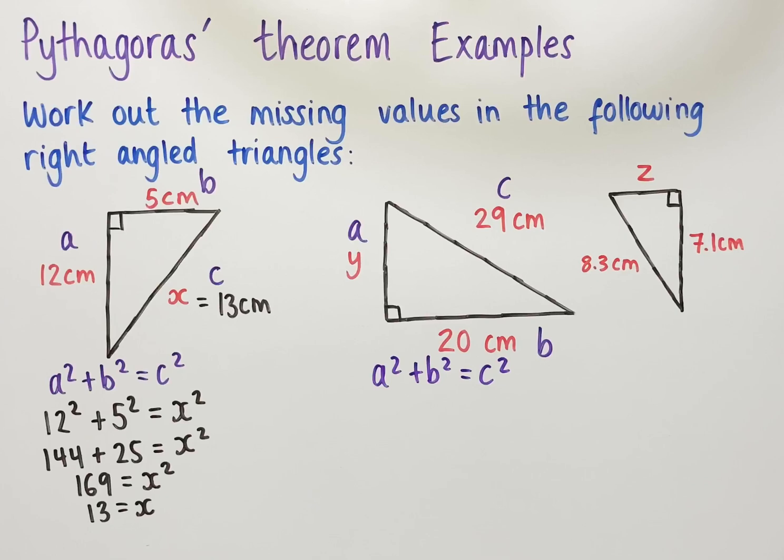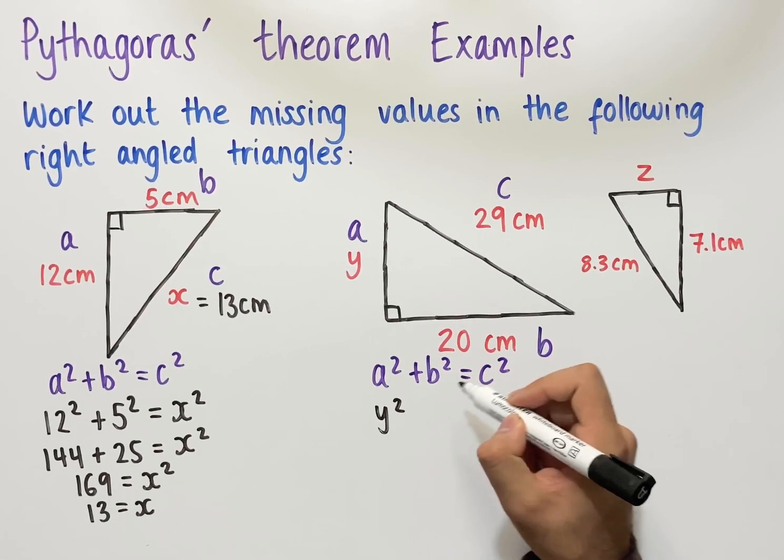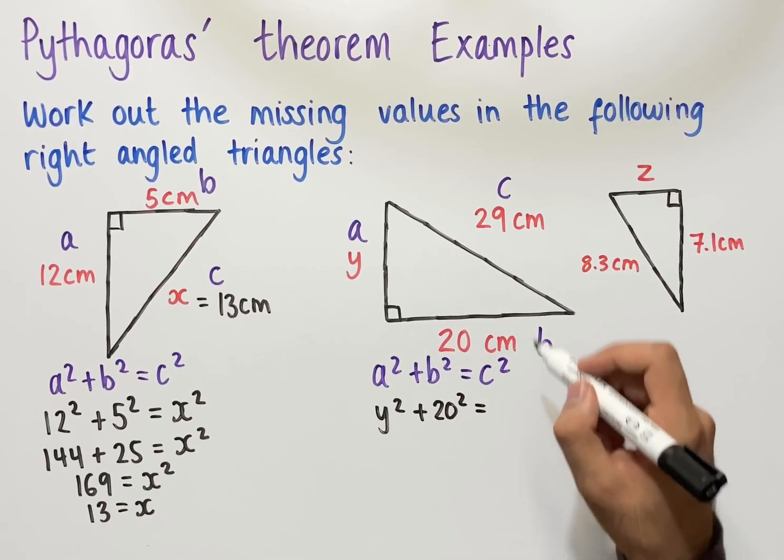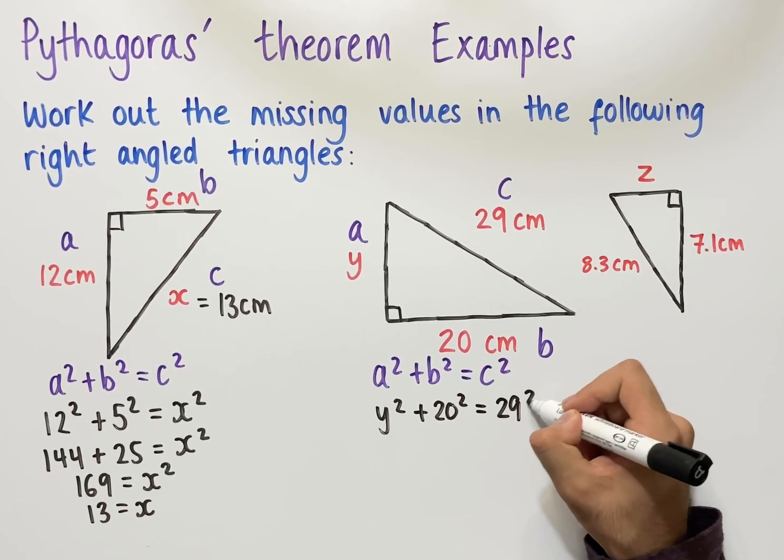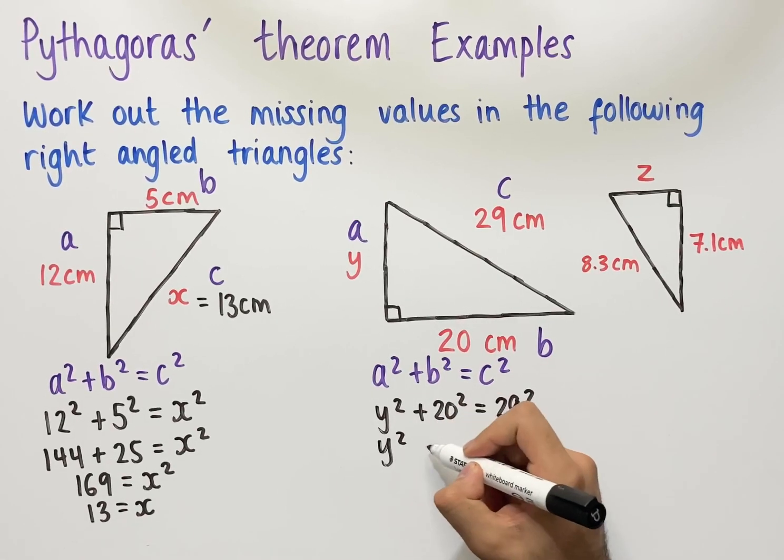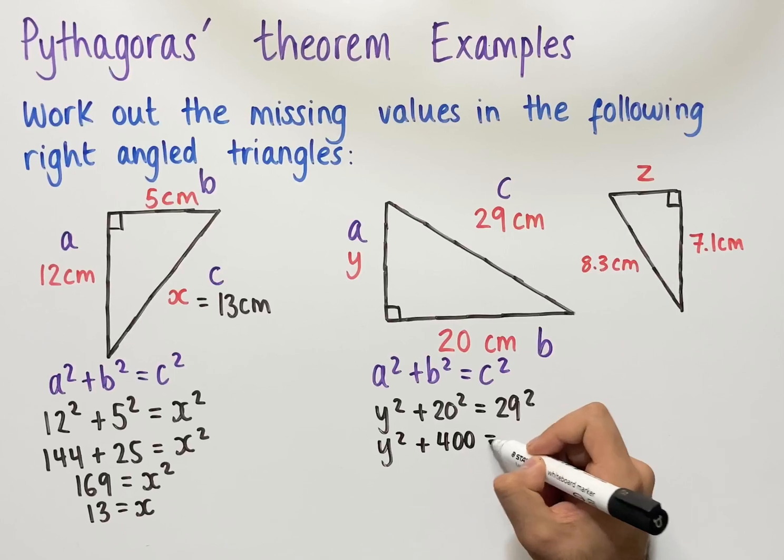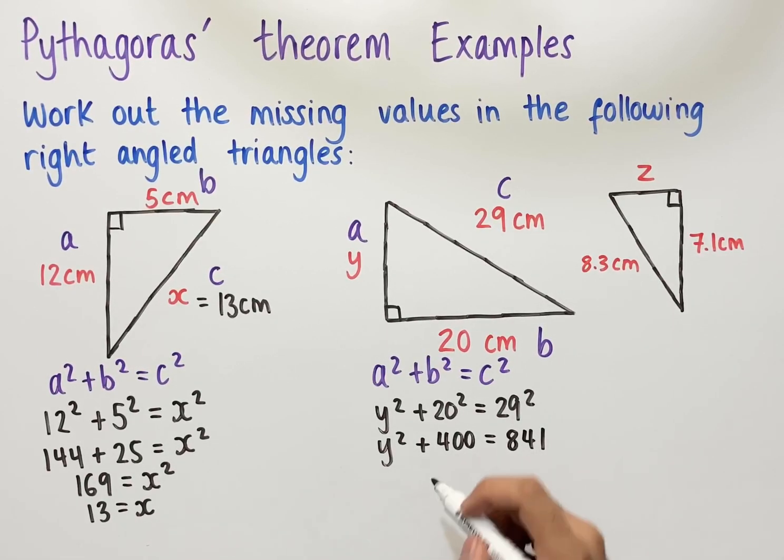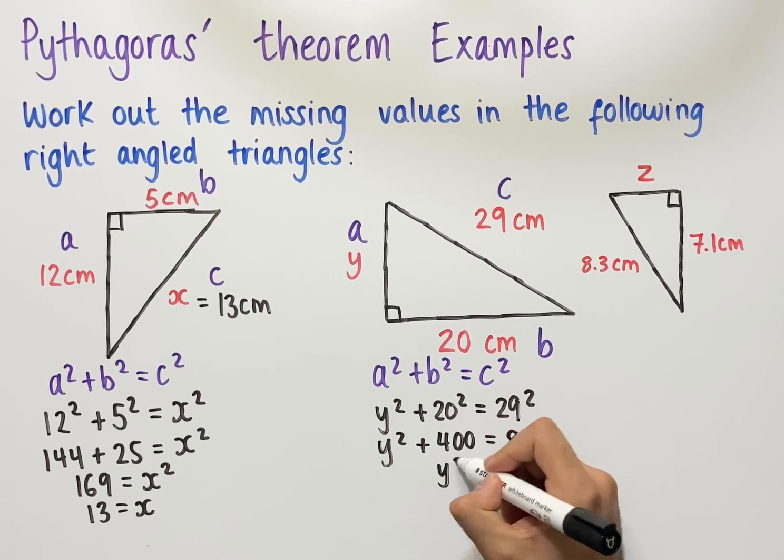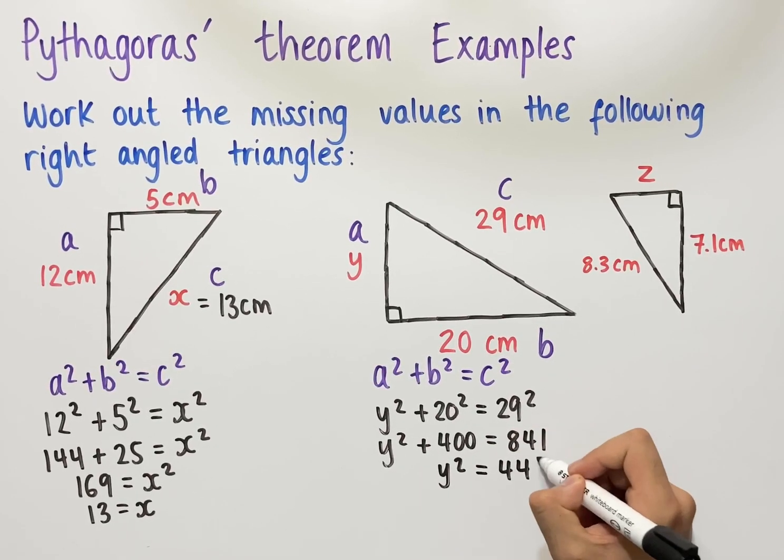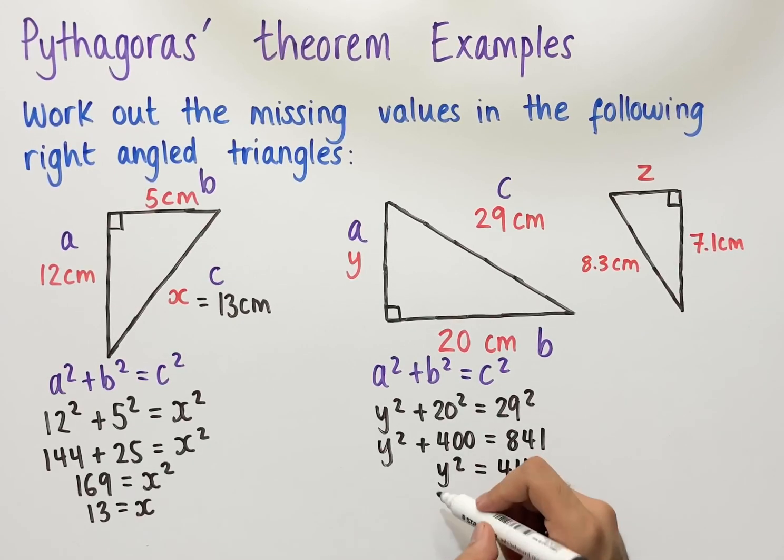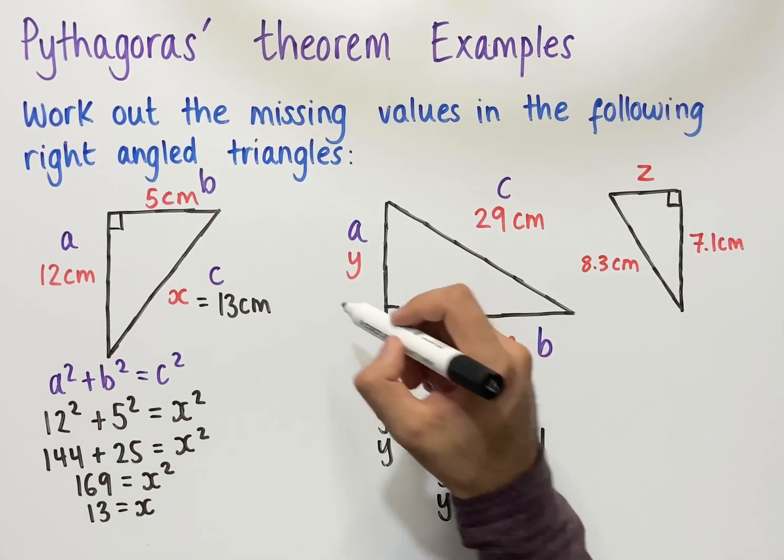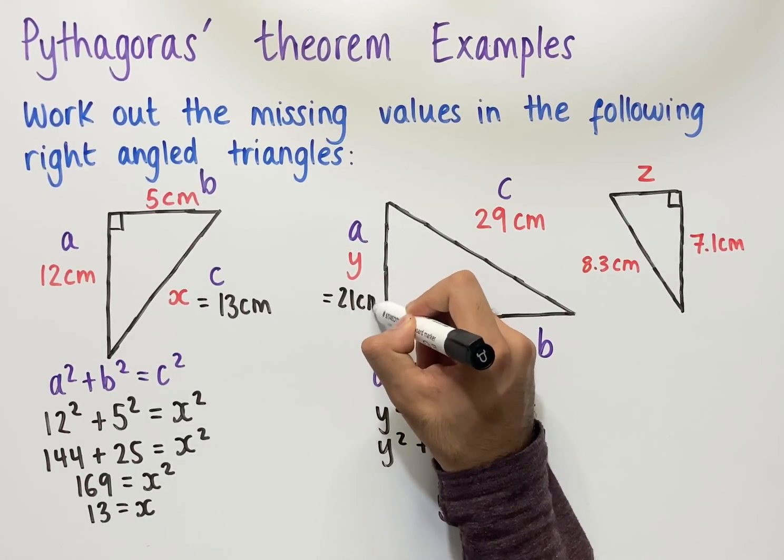So we have that a squared plus b squared equals c squared, and so now we need to substitute our values in. So we have y squared, b is equal to 20, so we have plus 20 squared, and that equals c squared, which in this case is 29 squared. This simplifies to y squared plus 400, which equals 841. Taking away 400 from both sides, we're left with y squared equals 441, and then square rooting both sides, we get that y equals 21. Therefore, as a measurement, y is equal to 21 centimetres.